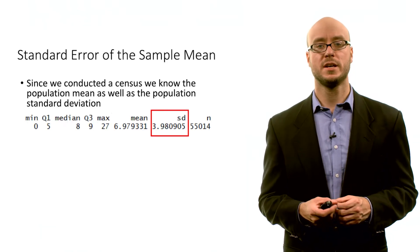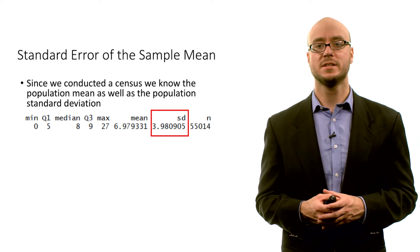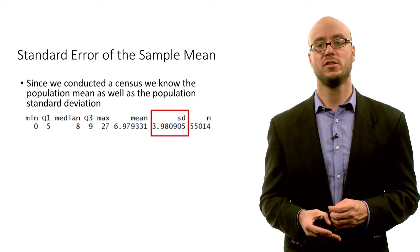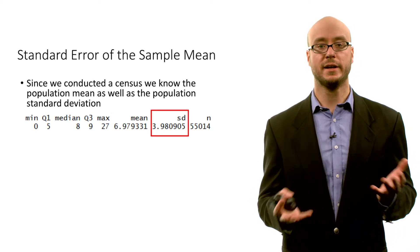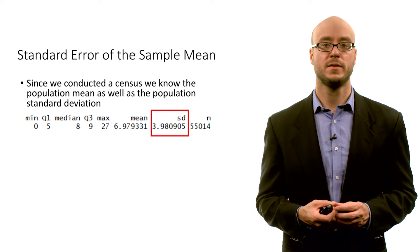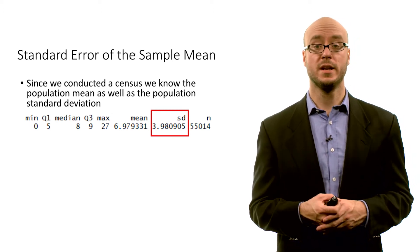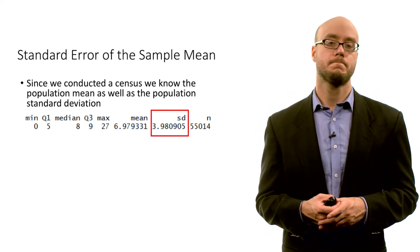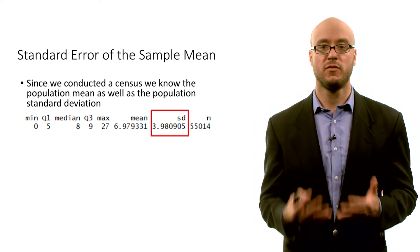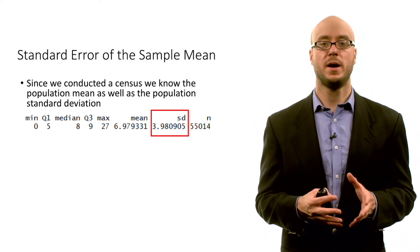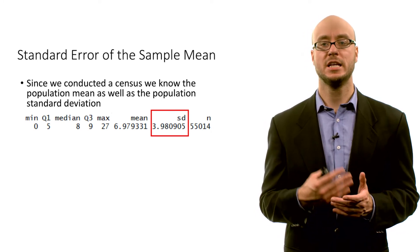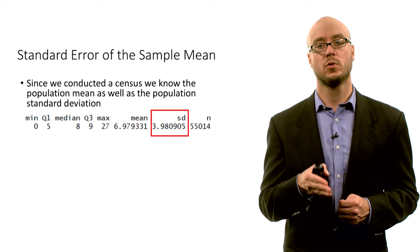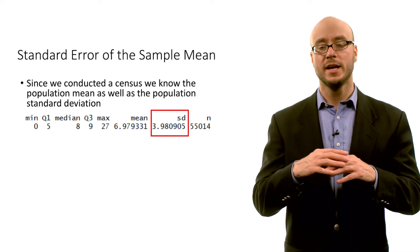Since we conducted a census, we in fact know the population mean for educational attainment, and we also know the population standard deviation sigma. We can calculate basic numerical summaries on our data on educational attainment in Iowa using the full census data. We see that in the population the standard deviation is about 3.98 years — that gives you the spread of educational attainment — and the average in the population is 6.98.